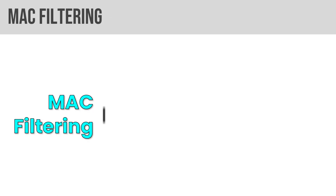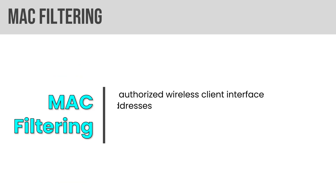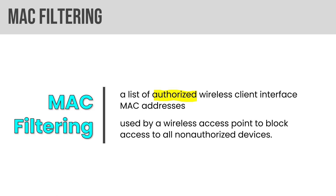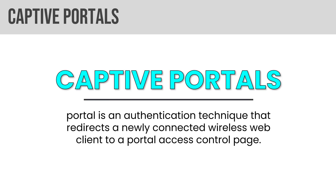MAC filtering uses a list of authorized wireless client interfaces — their MAC addresses, their layer-2 addresses — typically within the device. It's used by a wireless access point to block non-authorized devices. If they're not on the list, they can't join the network even if they have the SSID. Captive portal in the wireless sense redirects wireless web clients to a portal access control page. You see this frequently at hotels — the wireless client is redirected to a portal to log in with an account or agree to terms.